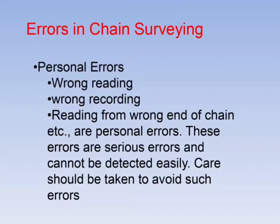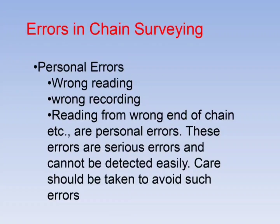Errors in chain surveying — Personal errors: Wrong reading, wrong recording, and reading from the wrong end of the chain. These are serious errors and care should be taken to avoid them. Wrong reading means instead of reading 18.15, the person reads 13.15. Wrong recording means the person correctly reads 18.15 but records it incorrectly.